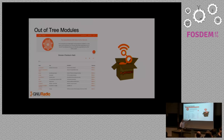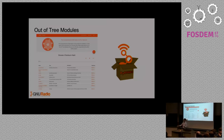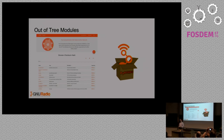One thing I really want to point out is we have this concept of out-of-tree modules in GNU Radio. We try to keep the primary distribution as clean as possible. If we tried to pull in everything being done with every new wireless standard — every new version of 802.11, cellular standards, modules to track airplanes or ships, satellite communication standards — the GNU Radio distribution would just explode. So we have this concept of out-of-tree modules.